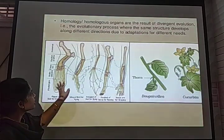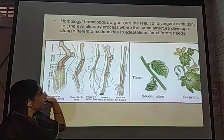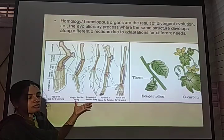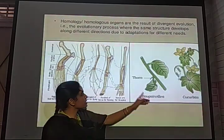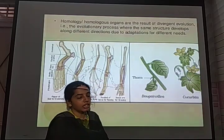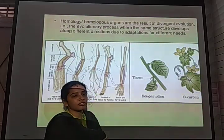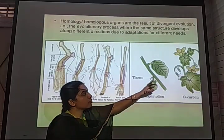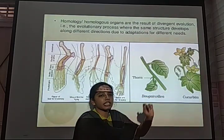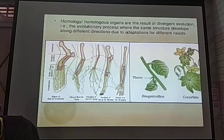In plants, thorns of Bougainvillea and tendrils of Cucurbita are also homologous — both originate from the axillary bud but perform different functions. Thorns provide support and protection for the plant, while tendrils help the plant climb a mechanical surface. This is an example of homology showing divergent evolution.